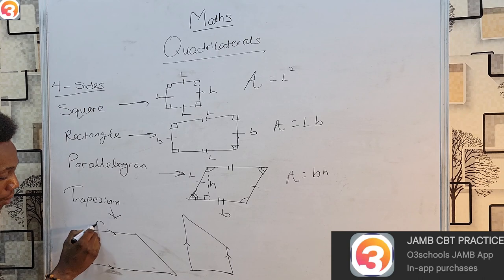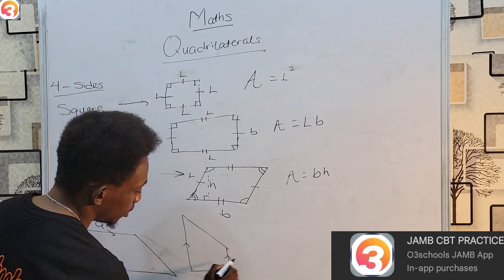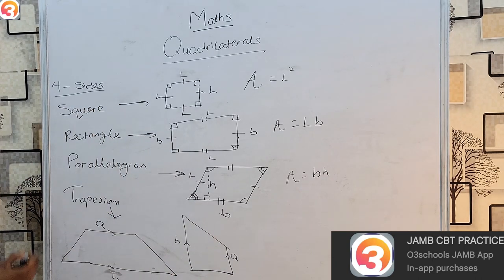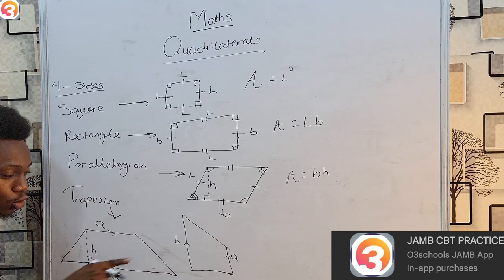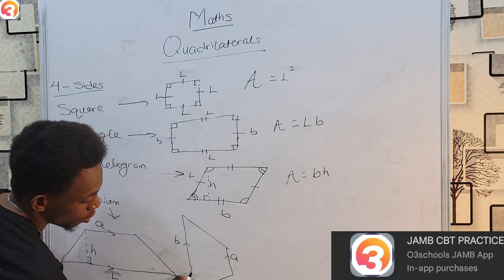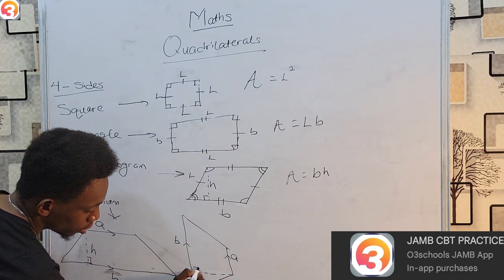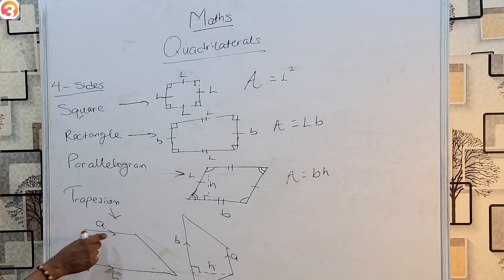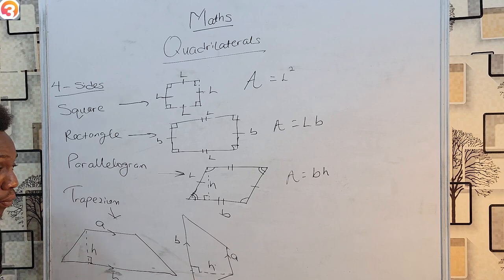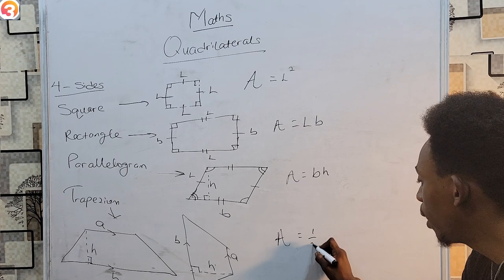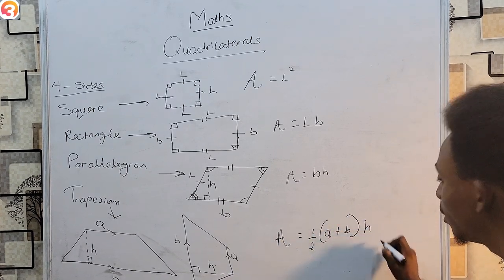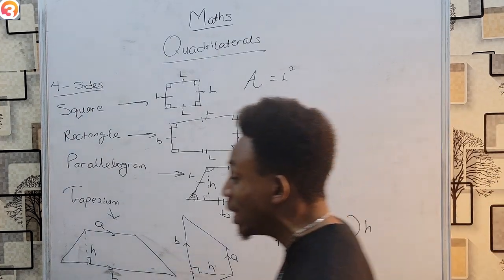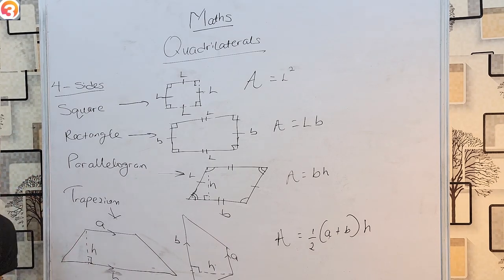For a trapezium, we always have two parallel sides which we can call A and B, and it will also have a perpendicular height H. The area of a trapezium equals one-half times the sum of the parallel sides times the perpendicular distance between them: Area = ½(A + B) × H. These are the four key quadrilaterals which JAMB asks often, and these are the formulas for their areas. In addition, a very simple but important concept is Pythagoras' theorem. If you draw a diagonal through any of these four-sided shapes it forms two right-angled triangles, and you may need to use Pythagoras' theorem when analyzing quadrilaterals.